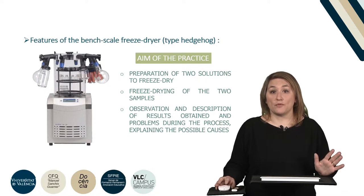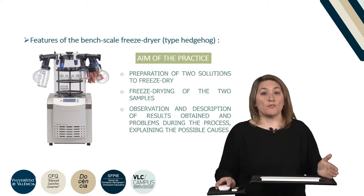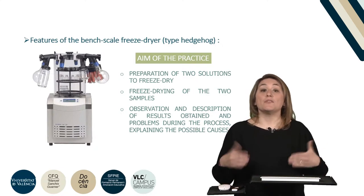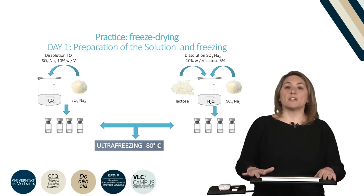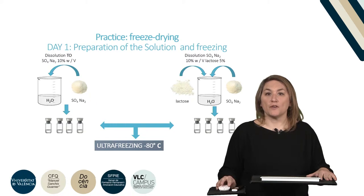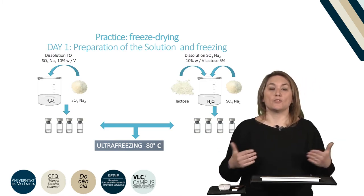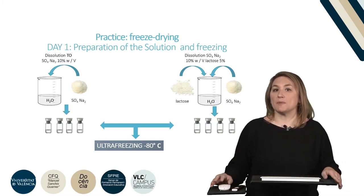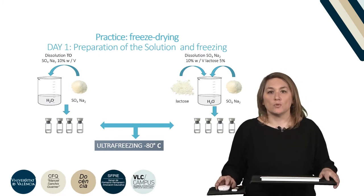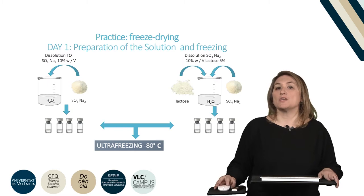That is the main reason why these freeze dryers are used only with low-demanding products. In this practice, we will prepare two solutions with different excipient compositions and we will observe and discuss the results obtained, the problems during the process, and their reasons. Ten milliliters of two solutions will be prepared and divided into four vials: a solution of 10% sodium sulfate in water, and another solution of 10% sodium sulfate in water to which we will add lactose at 5%. Lactose is an excipient that will act as a diluent or filler — an inert excipient added to very dilute solutions to provide mass to the solute, avoiding that once the solvent disappears, the solute is stuck onto the walls. This phenomenon is known as blowout.